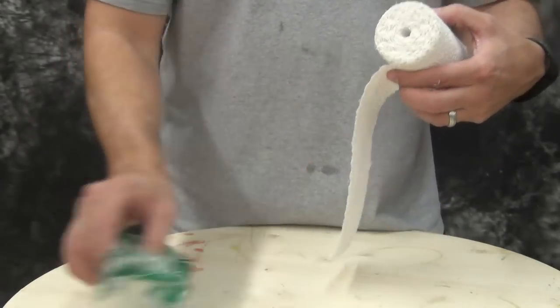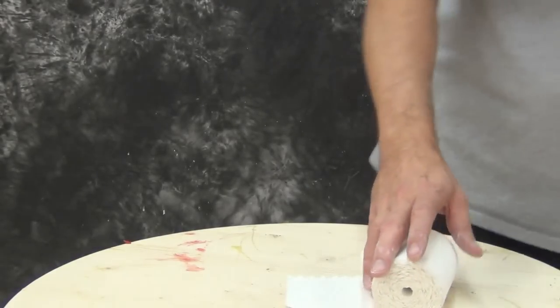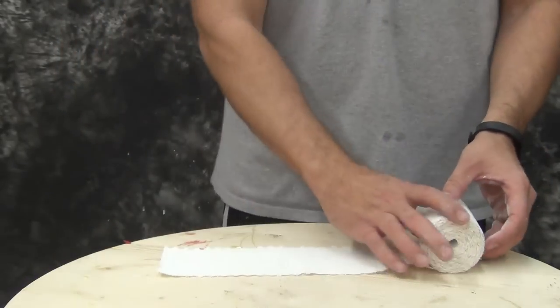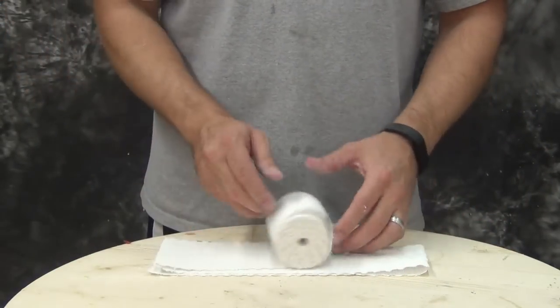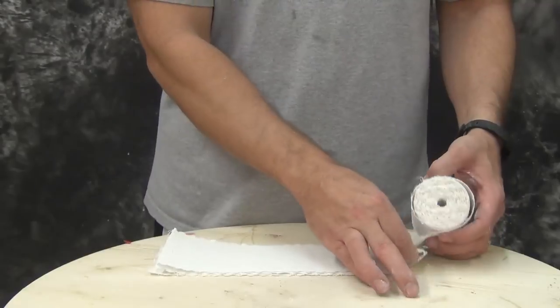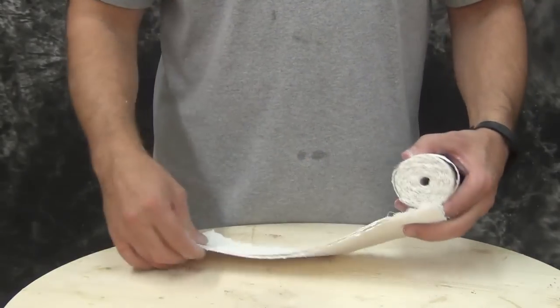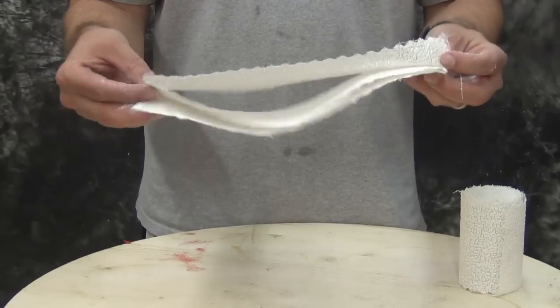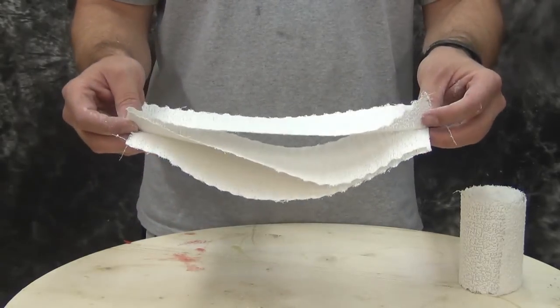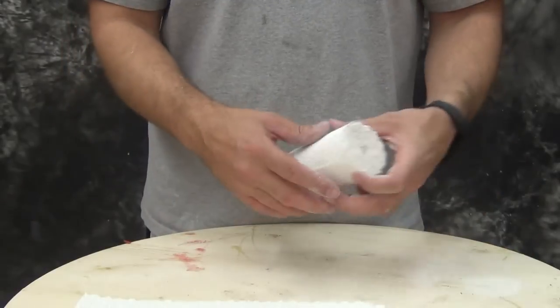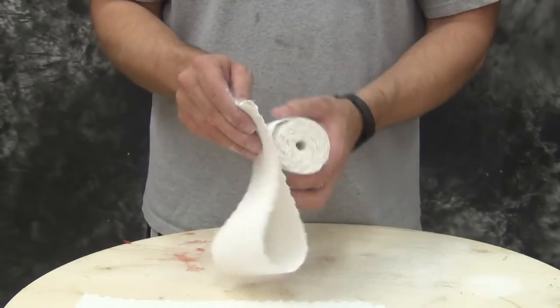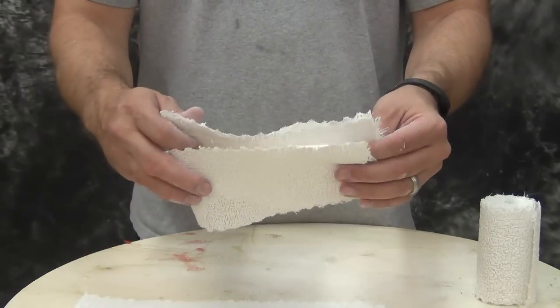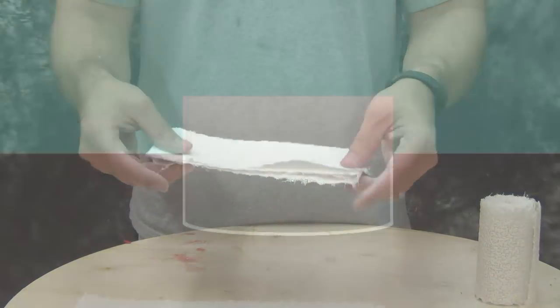I always layer my bandages. They come in rolls, this particular roll is four inches wide by five yards long. I always like to layer them at least three layers thick, and in some cases four layers thick, in this kind of zigzag pattern. That allows each section to be about three layers thick when I apply it. Since we're applying bandages overlapping each other, that gives us a total thickness of about six layers of bandage material. For an extra strong shell we could go with four layers thick.